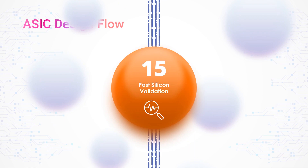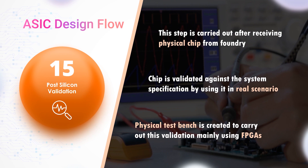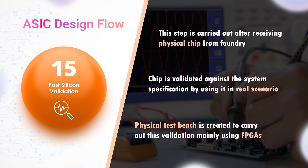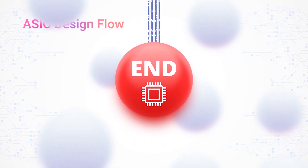Post-Silicon Validation: This step is carried out after the chip is received from the foundry. The chip is validated by using it in a real scenario. A physical test bench is made using FPGAs or other techniques, and the chip is validated against the specification. Finally, the entire design process is complete and the chip is ready to be introduced into the market if validation is successful.